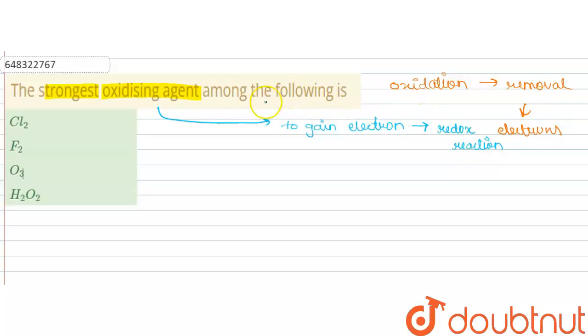Now, as the electronegativity of a species increases, its tendency to pull electrons also increases. So as the electronegativity increases, the tendency to pull electrons will also increase.